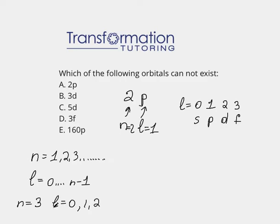So if my l will not follow the rule from 0 to n minus 1, then that orbital will not be able to exist. So let's go ahead and go through all of the answer choices and see which one will not be correct.